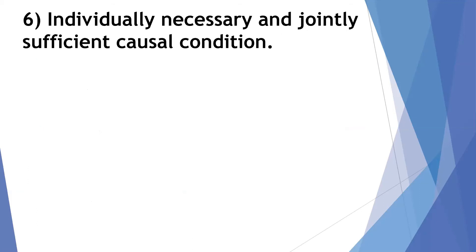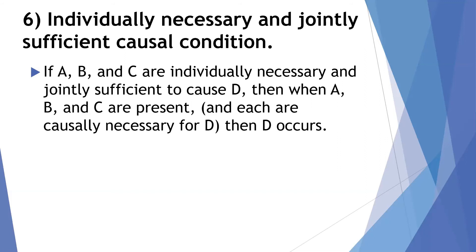All right, let's move on to some of the other types of causes. We can combine a couple of these and identify individually necessary and jointly sufficient causal conditions. And this is extremely helpful when we're trying to be really clear about a concept, be really clear about what brings something about.